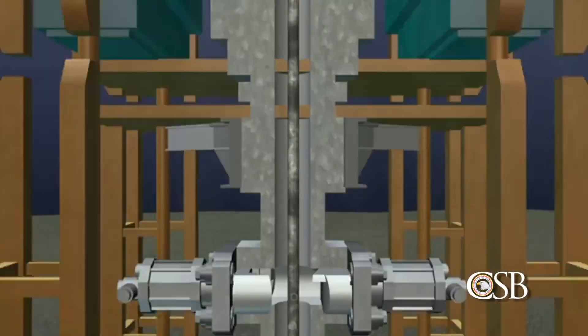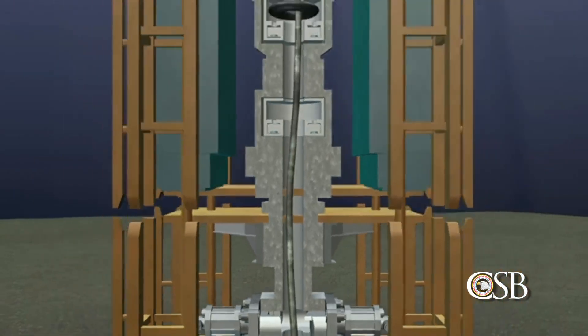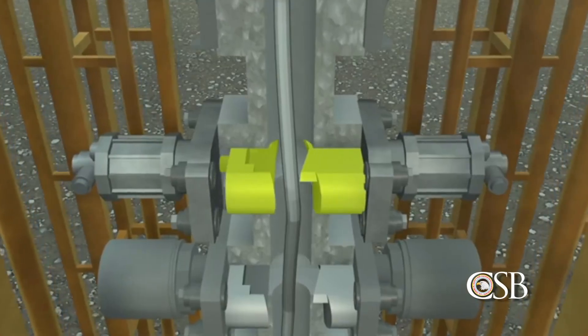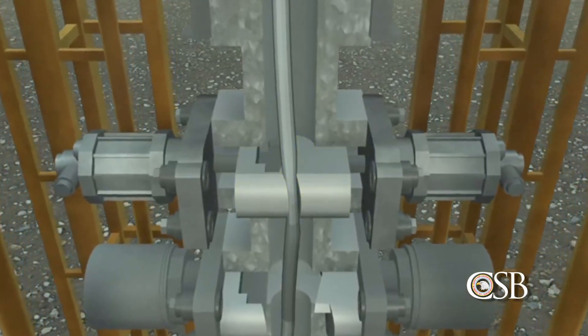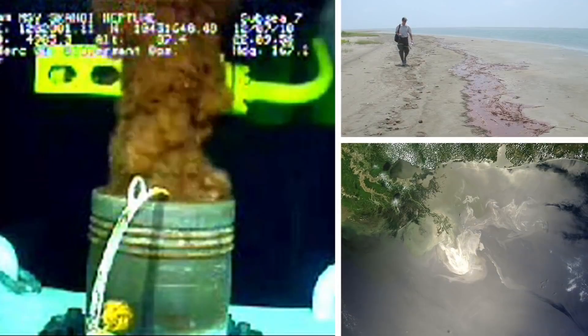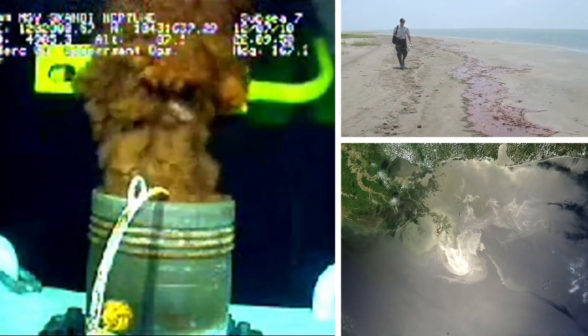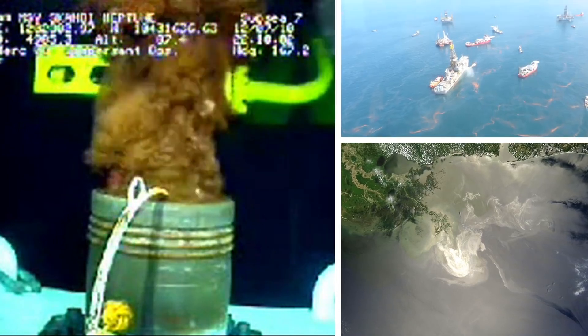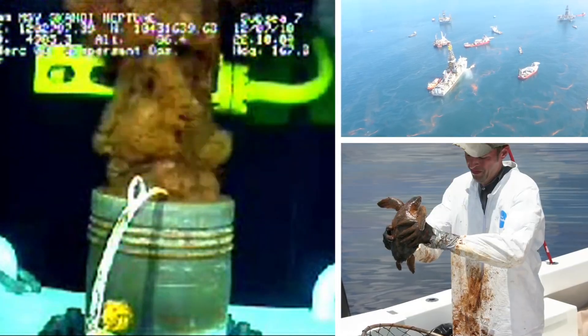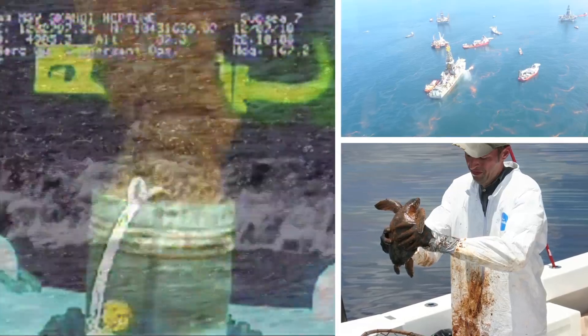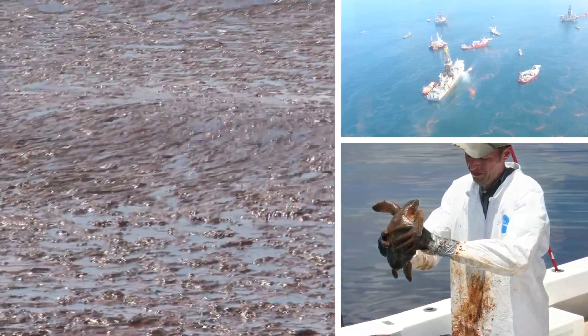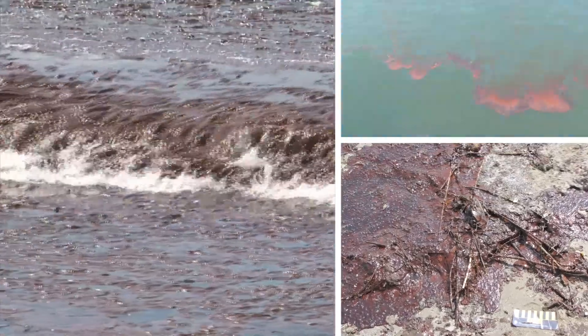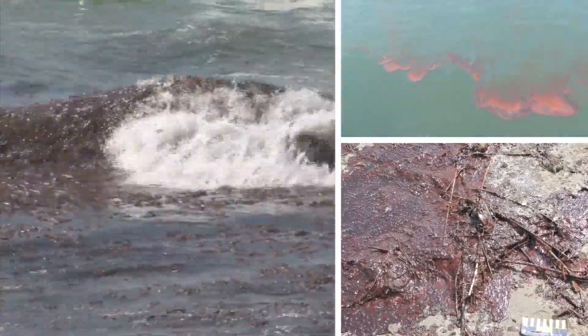In the case of the Deepwater Horizon accident, the buckled drill pipe prevented the blind shear ram from sealing the well. Oil and gas from the well flowed out of the buckled drill pipe and into the Gulf of Mexico for 87 days. A reported five million barrels of oil eventually spilled, causing one of the worst environmental disasters in United States history.